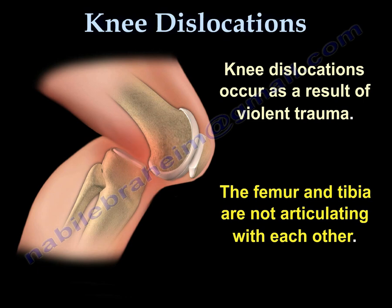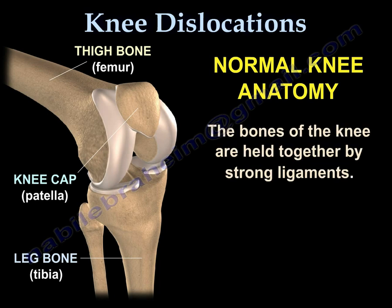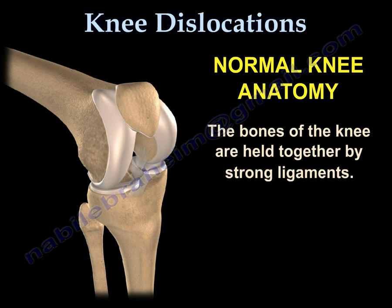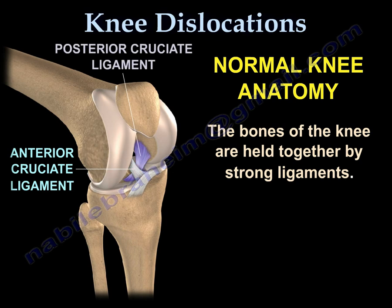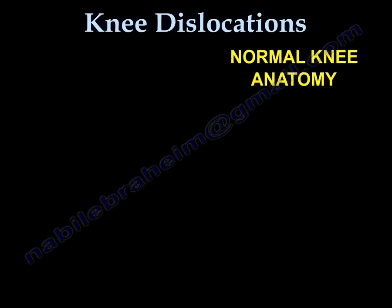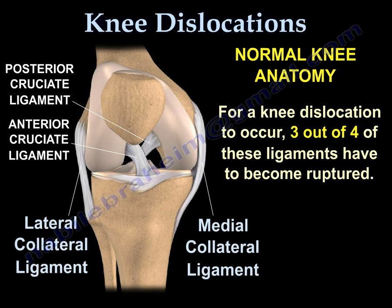The femur and tibia are not articulating with each other. The bones of the knee are held together by strong ligaments: the ACL, the PCL, the lateral collateral ligament, and the medial collateral ligament. For a knee dislocation to occur, three out of the four ligaments will become ruptured.